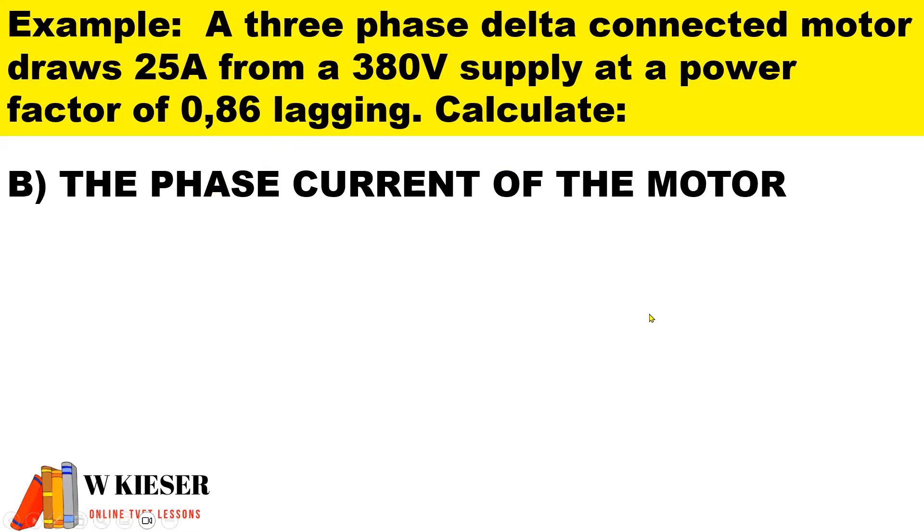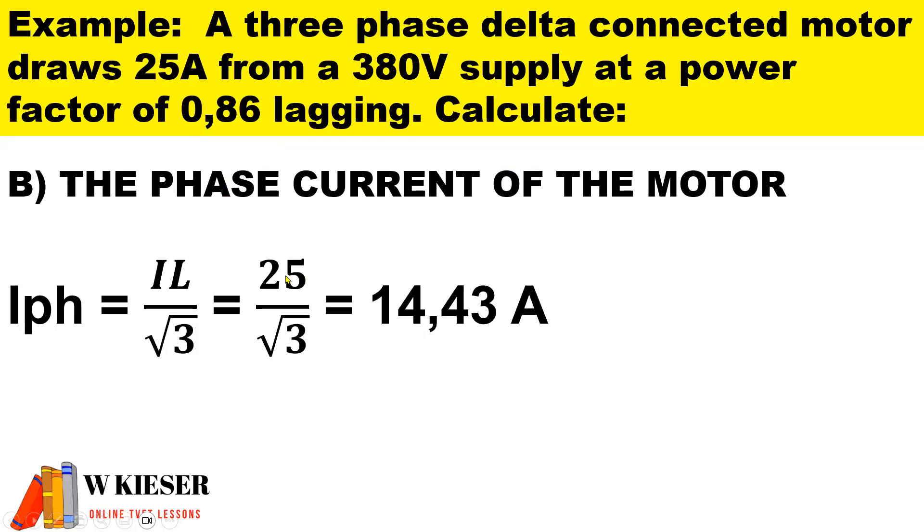To calculate the phase current of the motor, I phase is equal to IL divided by square root 3 because it's a delta connected motor. And so therefore we get 14.43 amps.